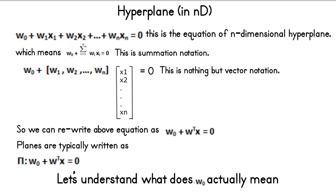Similarly, vector w has 1 row and n columns, so it can be written as w of dimension 1×n. This is simply matrix multiplication of a row vector with a column vector. We will look at different properties of line and plane in the next few videos. Given any vector, by default it is a column vector. If I write a vector x of n dimensions it would be a column vector x of dimension n×1. Using these notations, where w and x are column vectors, we can rewrite our equation as w0 + w-transpose · x = 0.